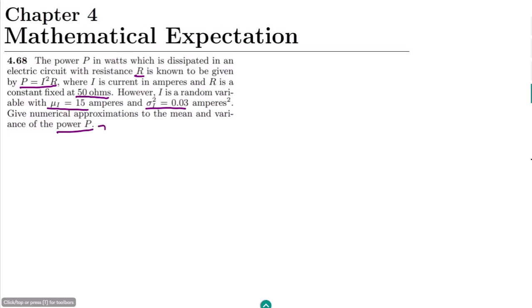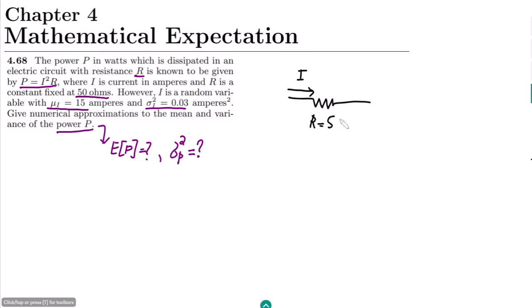What do we have to find out? We have to find out the expected value of P and also the variance of P. These two values are unknown. So this is a very interesting problem. Looking at it, we can see that if this is a resistor with a current flowing through it — a 50 ohm resistor — we have to find the expected value of P and the variance of P, where I is a random variable with the given quantities.